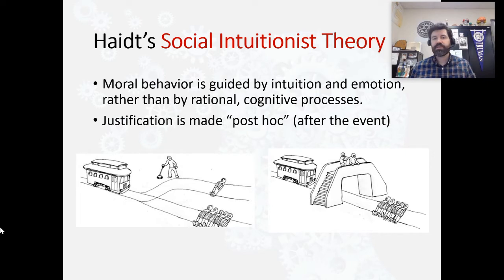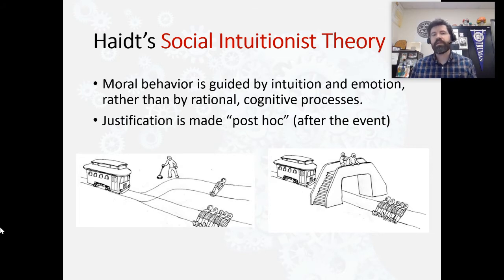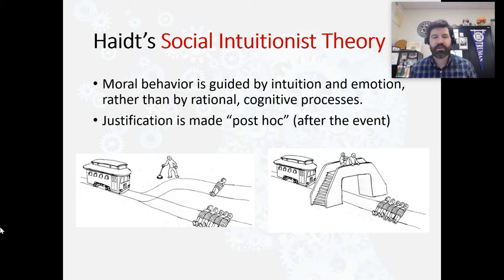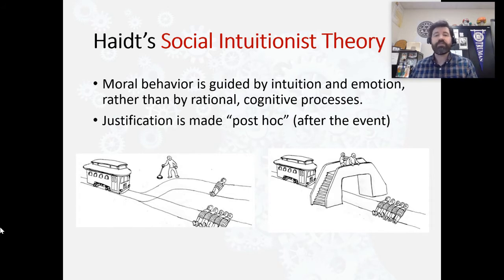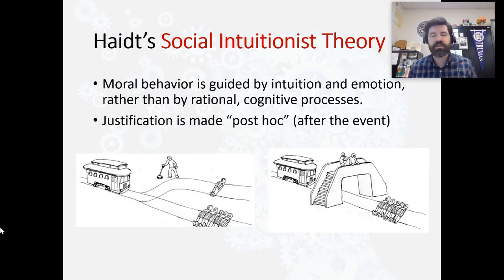It's a moral dilemma — there's not a right or wrong answer. For many people, they believe the morally right thing to do would be to pull that lever. It's utilitarian: saving five lives is better than saving one. The dilemma comes in because if you pull the lever, you are directly responsible for killing that one person. But not pulling the lever is also a conscious decision. For most people, pulling the lever seems to be the morally right thing to do.